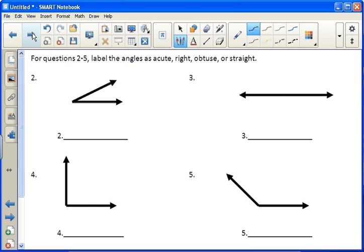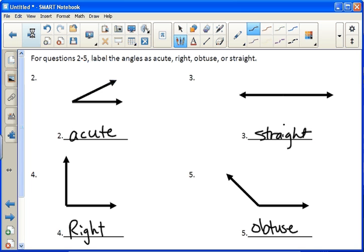Number 3 asks us to label the angles as acute, right, obtuse, or straight. This first one is acute because it's less than 90 degrees. The third one is straight because it's 180 degrees, it's a straight line. Four is right, it's a right angle. And then five is obtuse because it's bigger than 90.